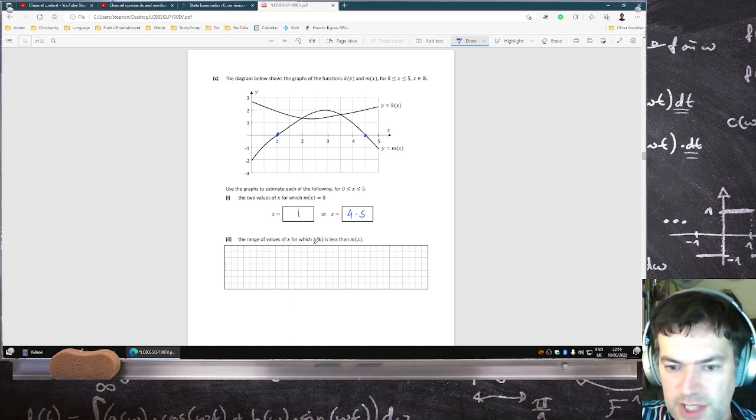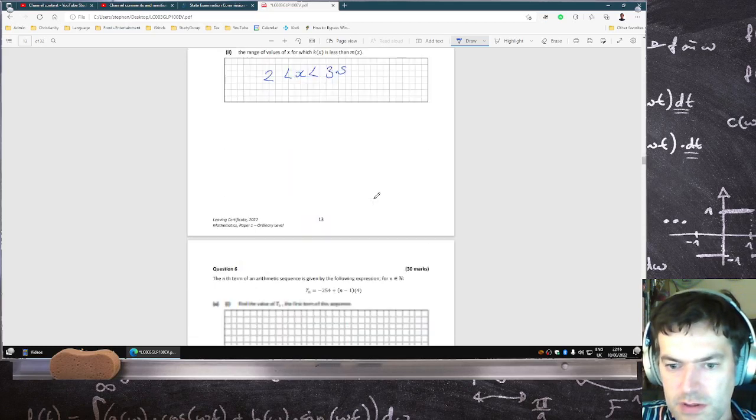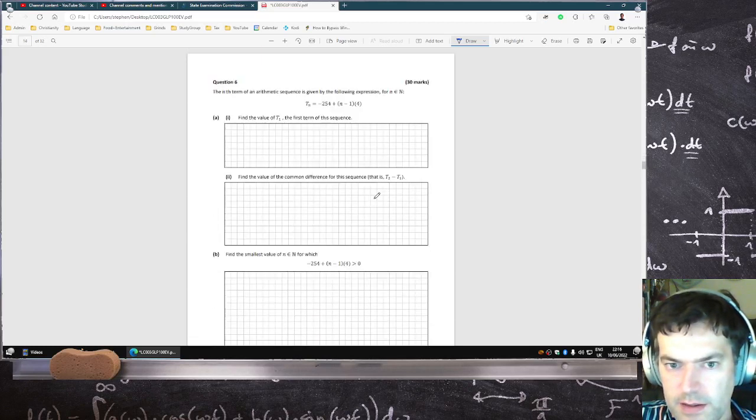The range of values of x for which kx is less than mx. So when is kx under mx? That's between two and three and a half. That's when kx is less than mx.